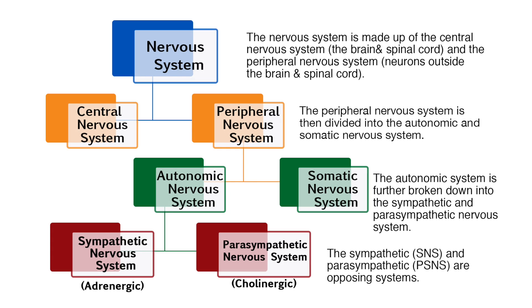The nervous system is made up of the central nervous system, which is the brain and spinal cord, and the peripheral nervous system, which are the neurons outside the brain and spinal cord. The peripheral nervous system is then divided into the autonomic and somatic nervous system. The autonomic system is further broken down into the sympathetic and parasympathetic nervous system.